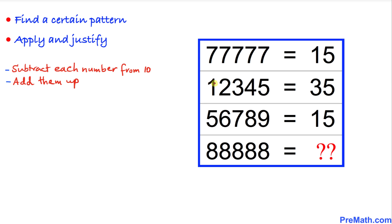Moving on to the next row, we do the same thing. 10 minus 1 gives us 9, 10 minus 2 gives us 8, then 7, and 10 minus 4 gives us 6, and 10 minus 5 gives us 5. Adding these numbers up: 9+8+7+6+5 gives us 35, which confirms the second row.